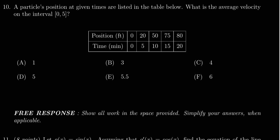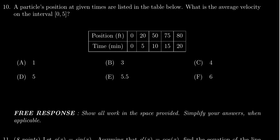In this video, we will provide the solution to question number 10 from practice exam number two for Math 1210. A particle's position at given times are listed below in the following table. So our function is provided in this tabular format. What is the average velocity on the interval zero to five?